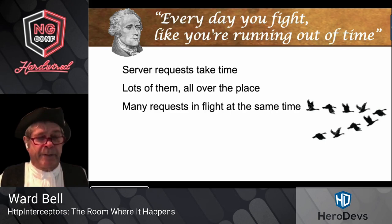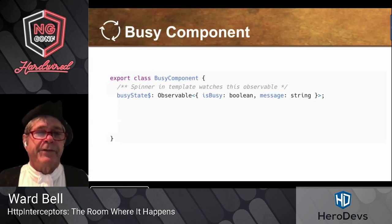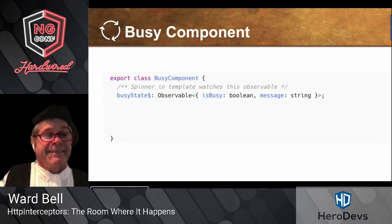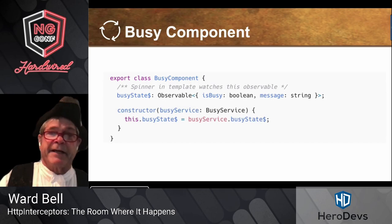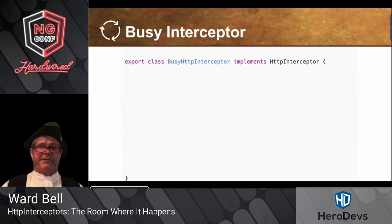You count them up and when you're done you let them all go. Show busy on the first request, hide busy after the last response, and keep it up in between. You'd start with a busy component that uses an observable I created in my busy service called busyState. We inject it, and when busyState is true the loading spinner shows up, and when it goes false it disappears.